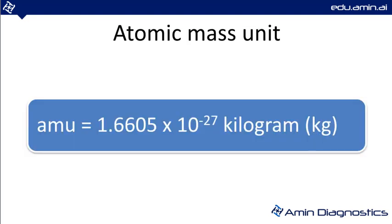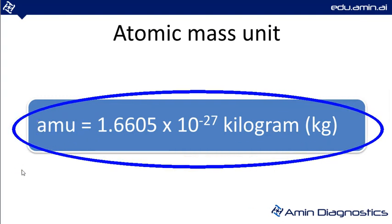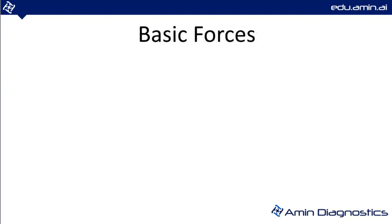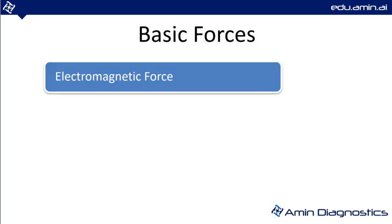The unit of atomic mass is the AMU. One AMU is equal to 1.6 × 10⁻²⁷ kg — a very small unit, which is what we use to measure the mass of electrons, protons, and neutrons.